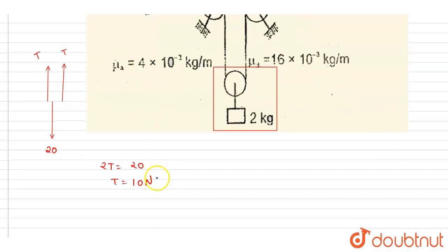The tension is the same, so we write velocity as the square root of T by μ_A. If you put the value here, μ is 4 × 10^-3, so it becomes 10^3 in the denominator.